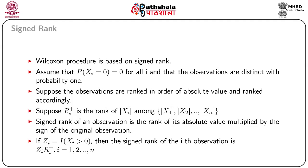Suppose the observations are arranged in order of absolute value and ranked accordingly. Suppose ri-plus is the rank of |xi| among |x1|, |x2|, ..., |xn|. The signed rank of an observation is the rank of its absolute value multiplied by the sign of the original observation. If zi denotes the indicator of xi greater than 0, then the signed rank of the i-th observation is zi multiplied by ri-plus, for i from 1 to n.